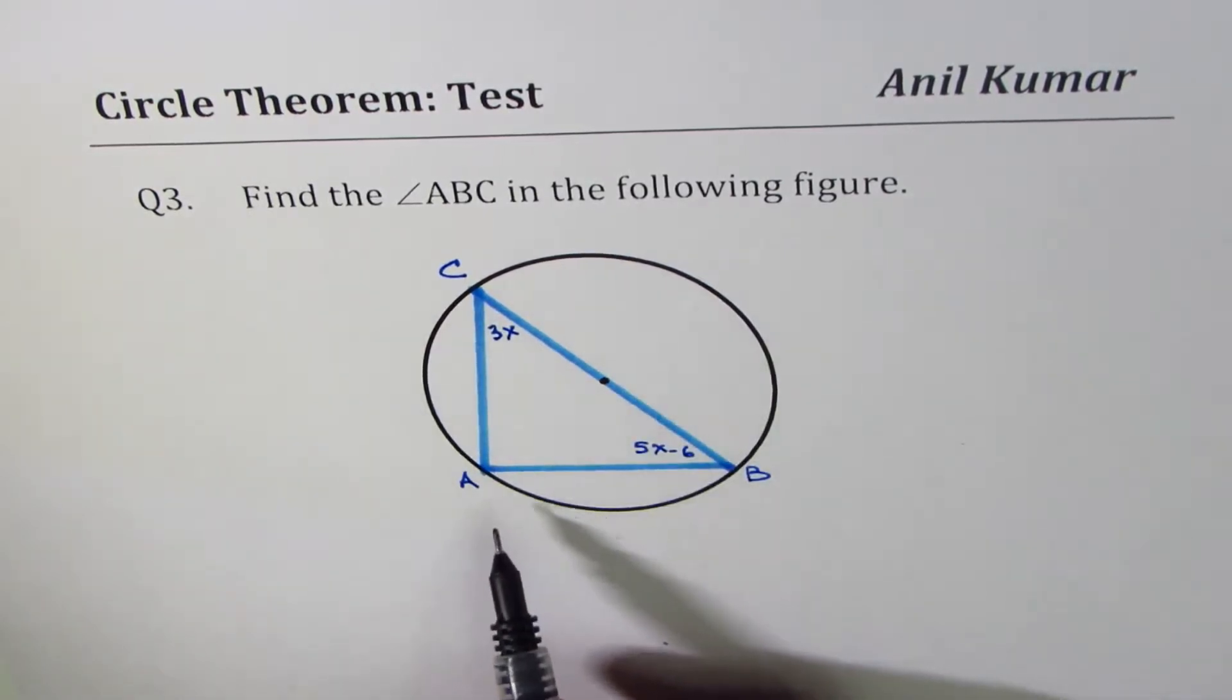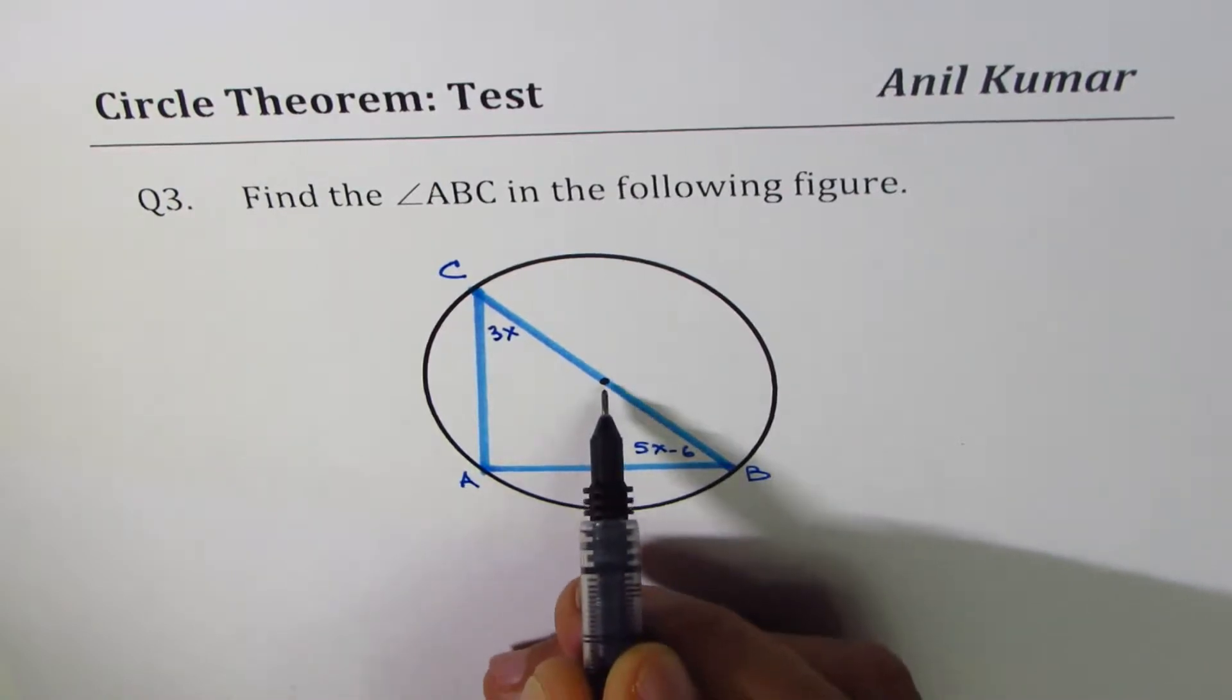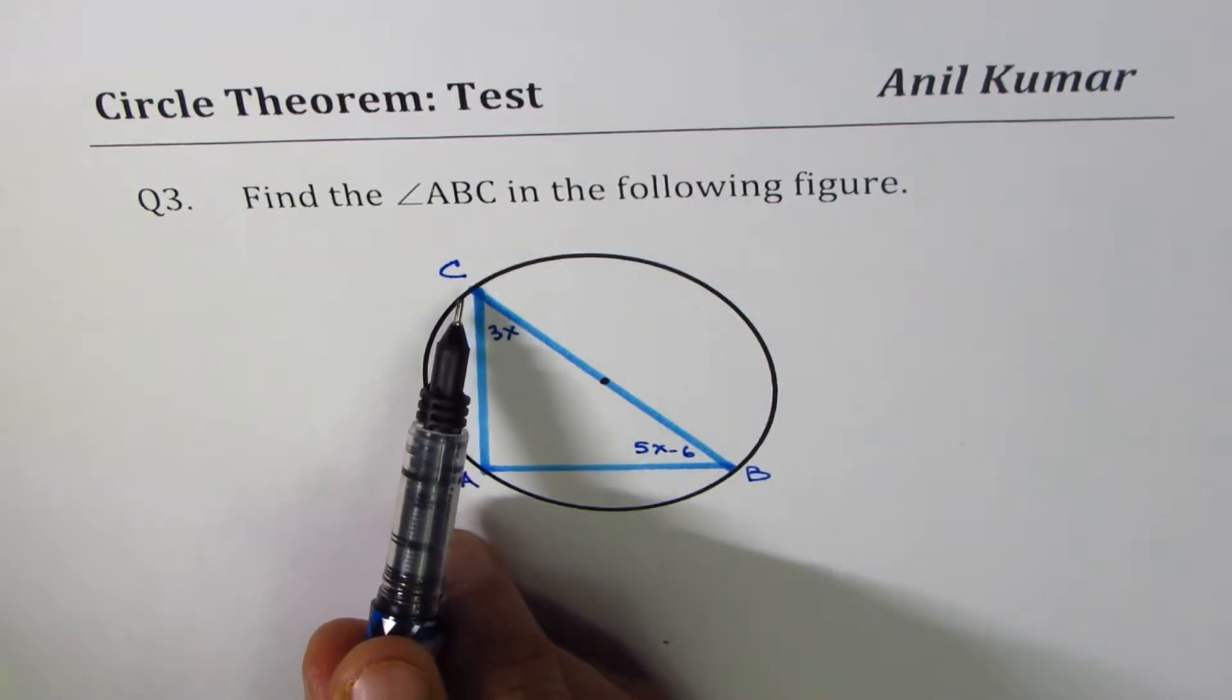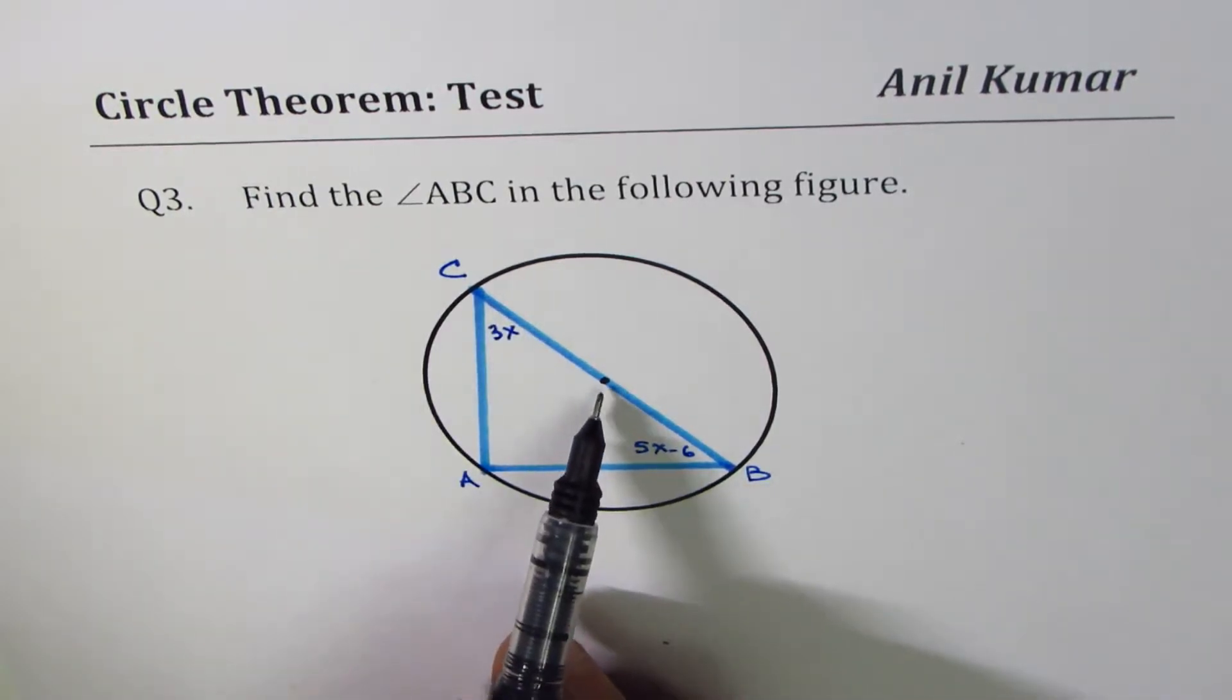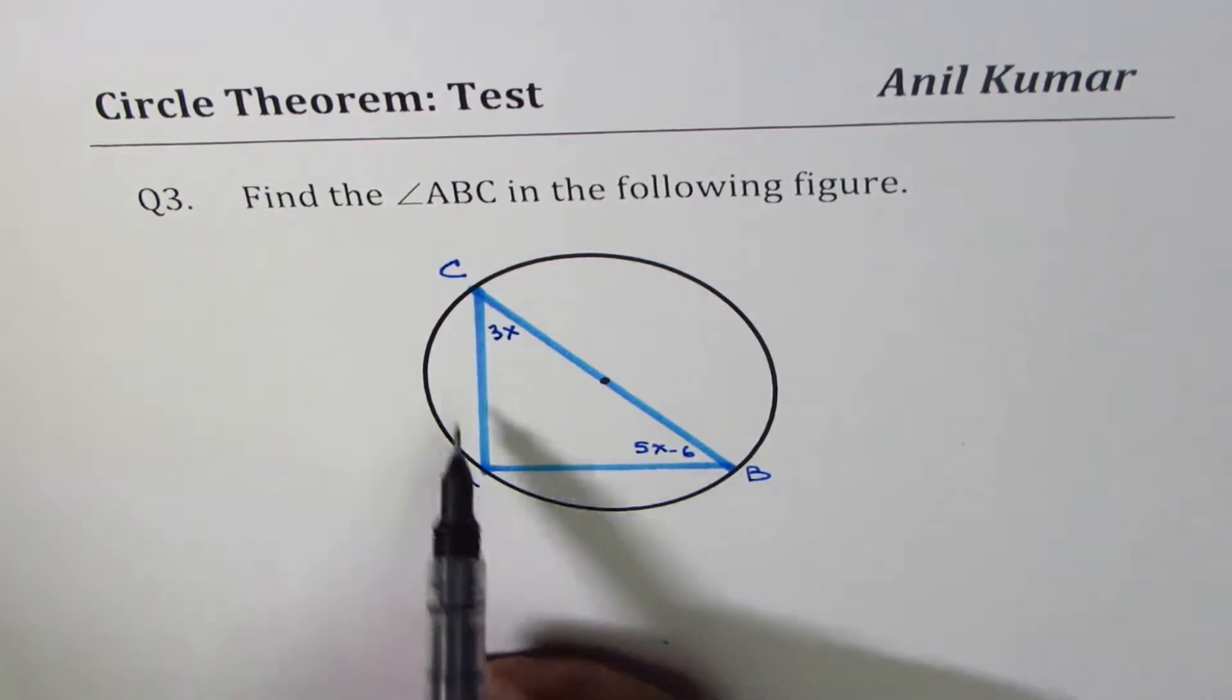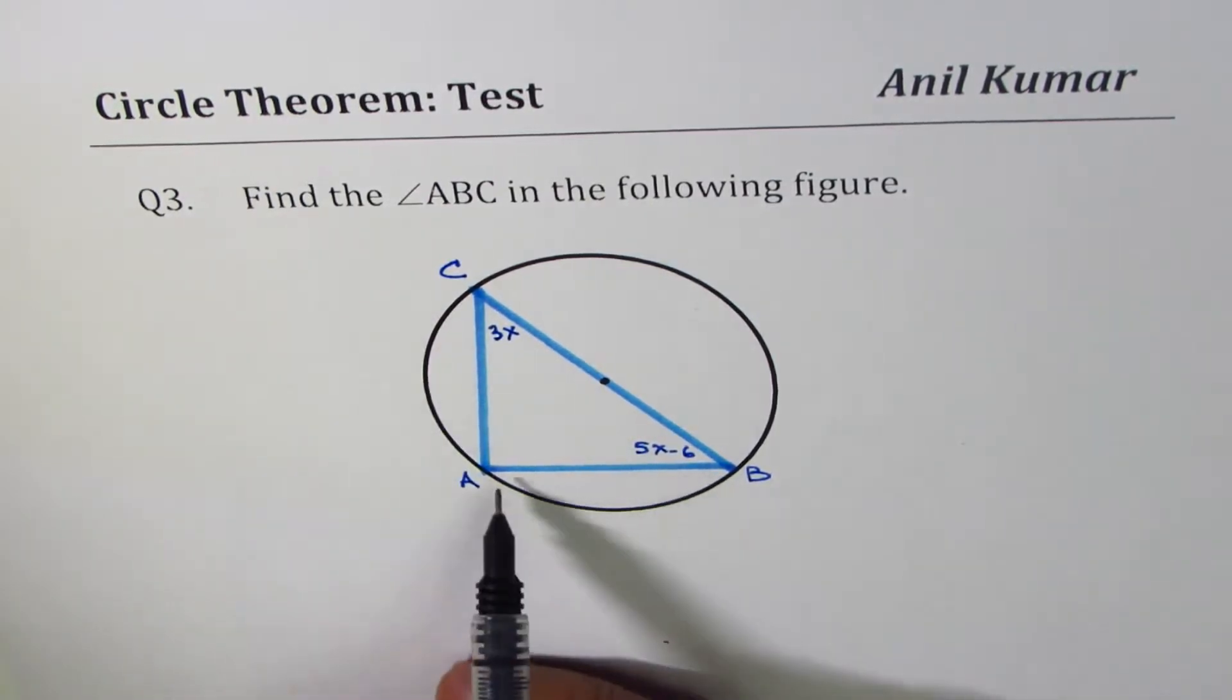Now in the circle we are given triangle ABC. This dot indicates the center of the circle. Since the chord CB goes through the center, it is the diameter, and we have a semicircle in which A is the inscribed angle.